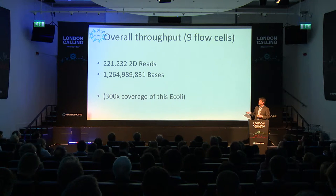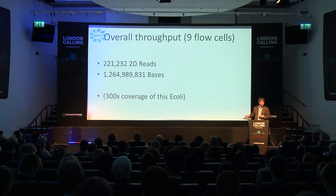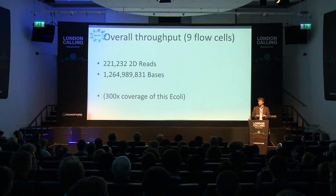Overall, we have 200,000-odd 2D reads — about a gigabase now. This means we're getting to 300x coverage of this single E. coli. I suspect we will know more about the bases in this E. coli on Nanopore than anything else on the planet, which is my goal. So if you're a data analyst and you want to understand variants, this is the place to come.